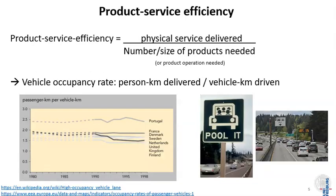The product-service efficiency is defined as the physical service delivered — the useful output — divided by the number or the size of the products needed. The most prominent example is probably vehicle occupancy: a vehicle drives along the road, and the more people sit in the vehicle, the more efficient the service that is provided by the vehicle.